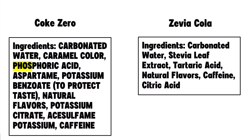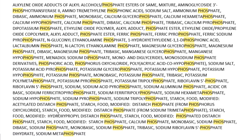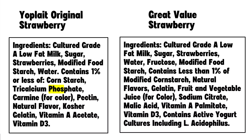You'll notice I only highlighted the letters 'phos' — that's because there are a ton of different types of phosphorus additives, too many to memorize. The good news is they all contain the letters 'phos,' so that's all you need to train your eyes to look for. For example, comparing Yoplait strawberry yogurt to Walmart's Great Value strawberry yogurt: the Yoplait contains phosphate, while the Great Value version does not.